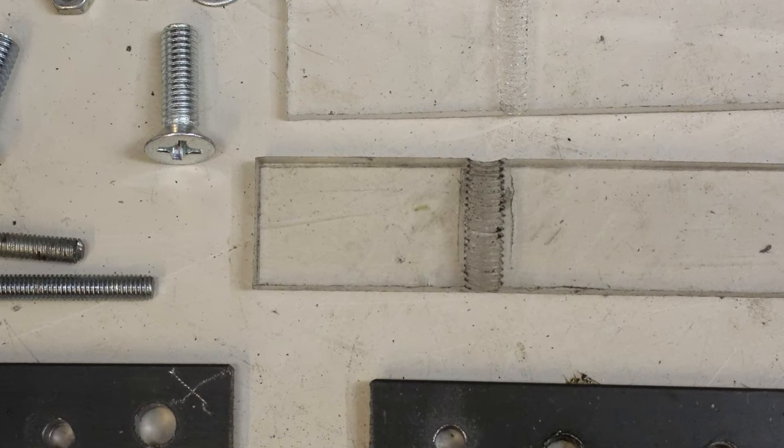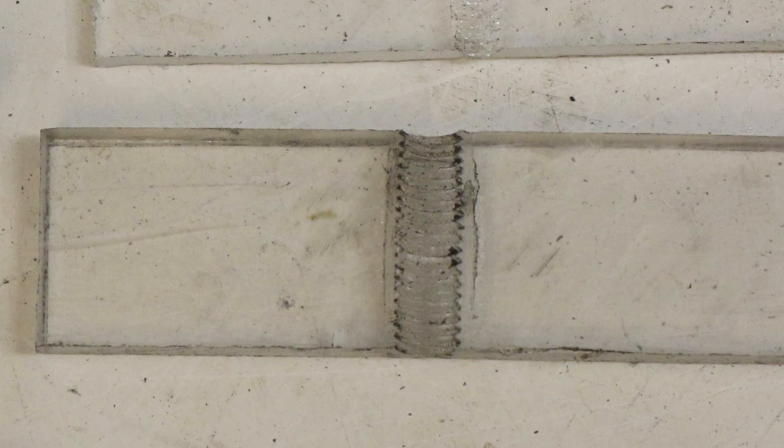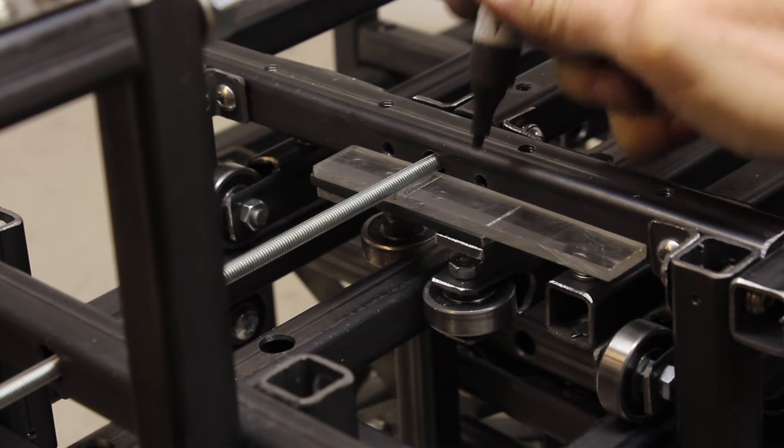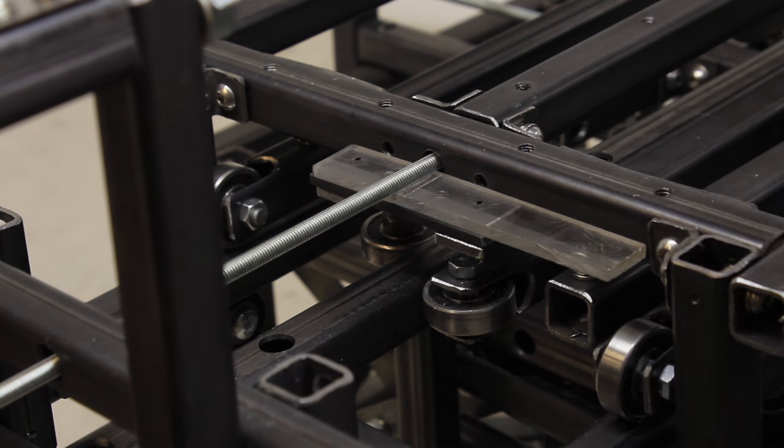After cooling down and grinding the edges, you have an accurately fitting counterpart for the threaded rod. The drilling is done after aligning the plastic stripe correctly and marking the hole positions.